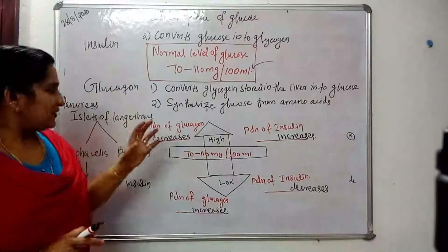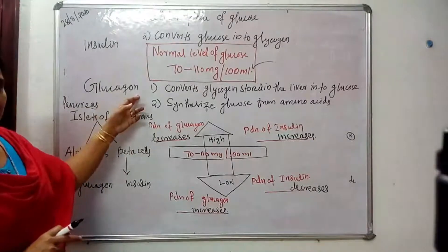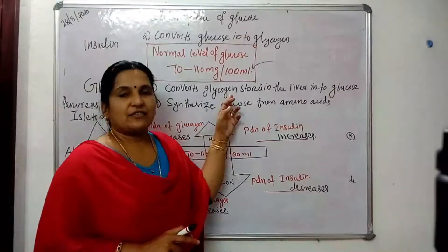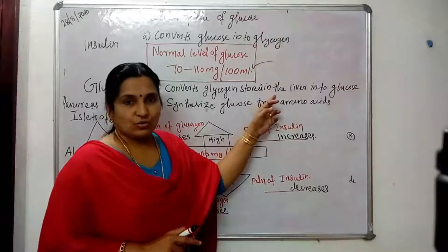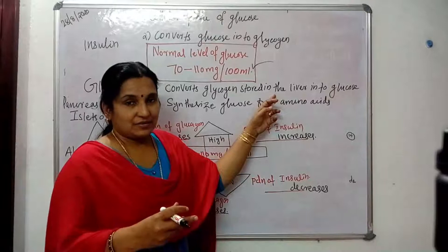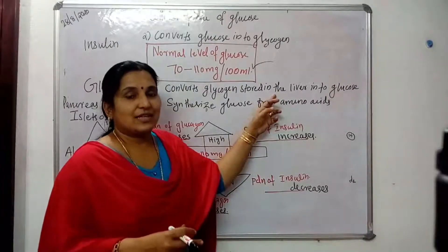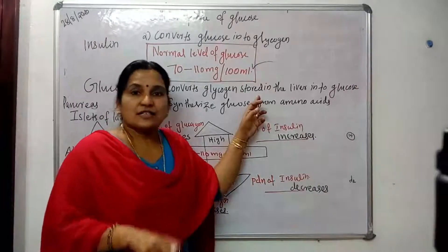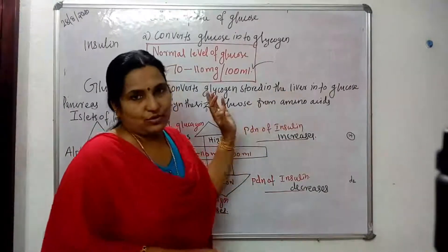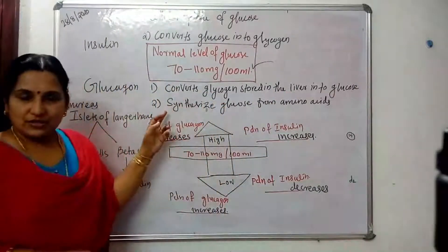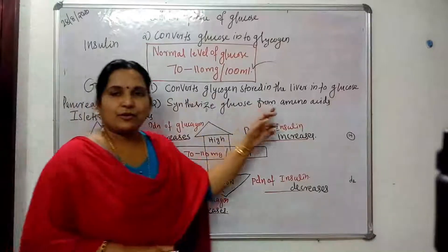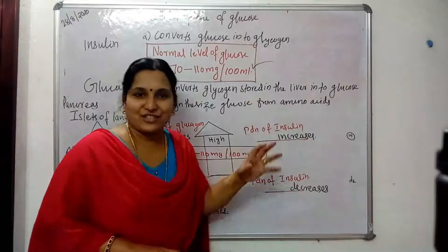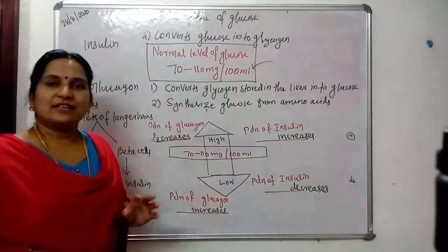The functions of insulin are: first, it converts glucose into glycogen; and second, it helps in the cellular uptake of glucose. The function of glucagon is that it converts glycogen stored in the liver back into glucose whenever cells require it, and it also produces glucose from amino acids.